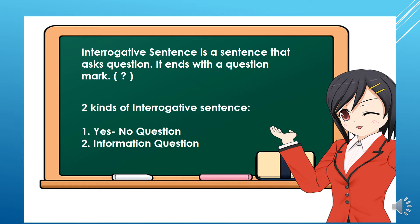An interrogative sentence is a sentence that asks a question. It ends with a question mark. There are two kinds of interrogative sentences: a yes or no question, which is answerable by yes or no only, and an information question, which requires a specific answer. It usually begins with who, what, when, where, why, how, and how much.